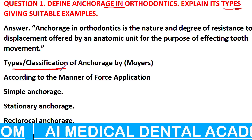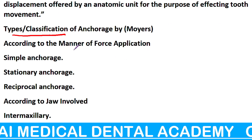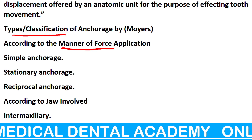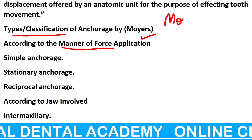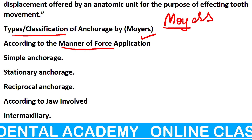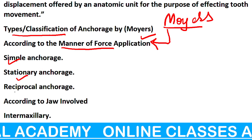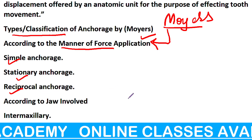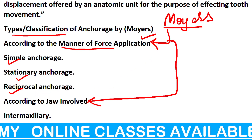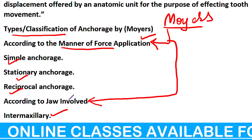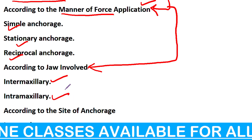अब कौन-कौन से types हैं? According to the manner of force — Moyers ने दिया है — according to Moyers, पहले आता है: Simple, Stationary, Reciprocal. फिर आता है: Intermaxillary और Intramaxillary। ऊपर का, नीचे का।